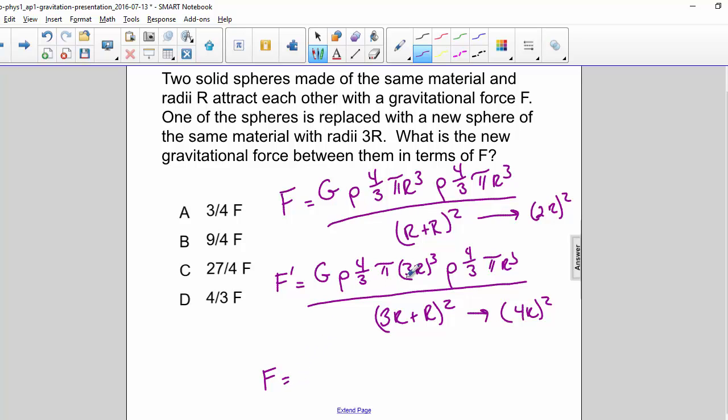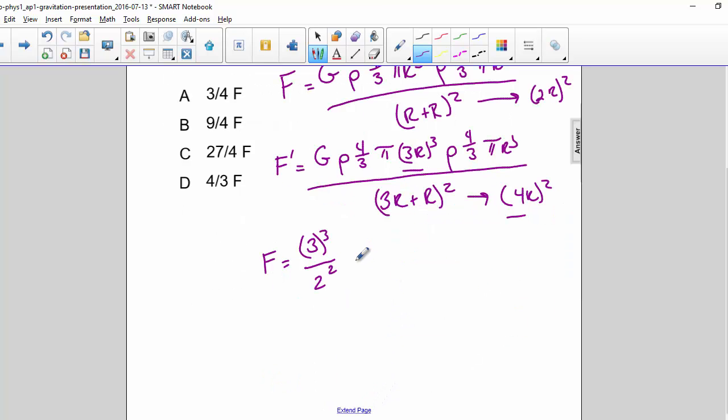So now let's factor out the 3 cubed on top from right here and 2 squared from right here. So what we're left with is G rho 4 thirds r cubed rho 4 thirds r cubed over 2r squared.